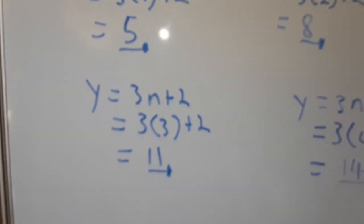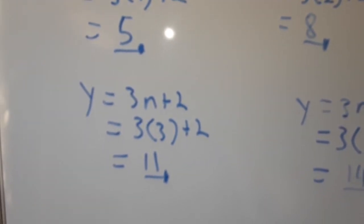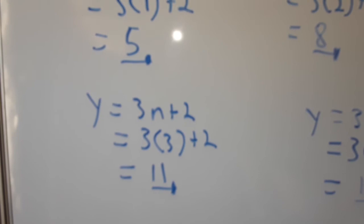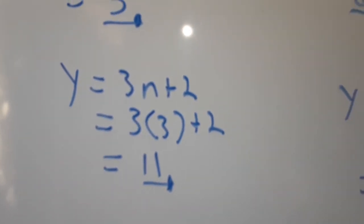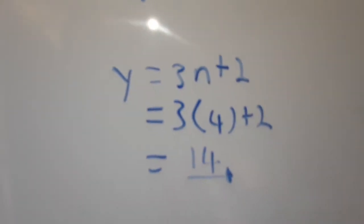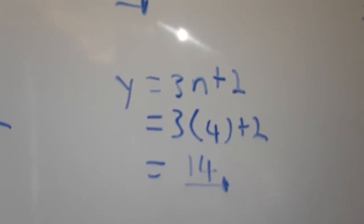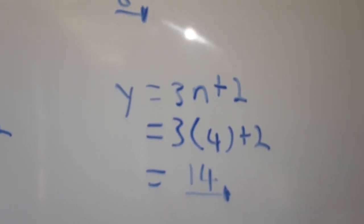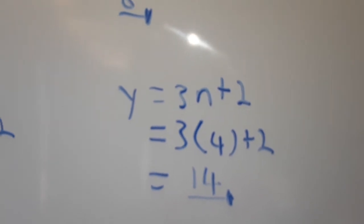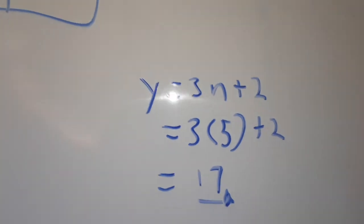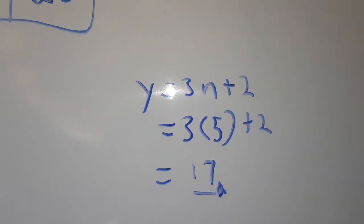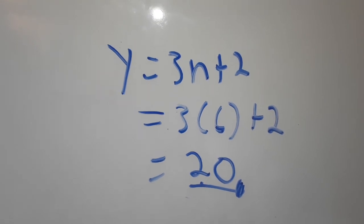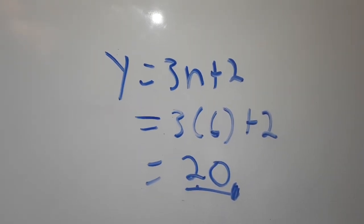When our input is 3, we say 3 bracket 3 plus 2 — 3 times 3 gives us 9 plus 2, which gives us 11. When our input is 4, we say 3 bracket 4 plus 2 — 3 times 4 is 12, plus 2 gives us 14. When input is 5, 5 times 3 is 15 plus 2 is 17. Last scenario: input is 6, 6 times 3 is 18 plus 2 gives us 20.